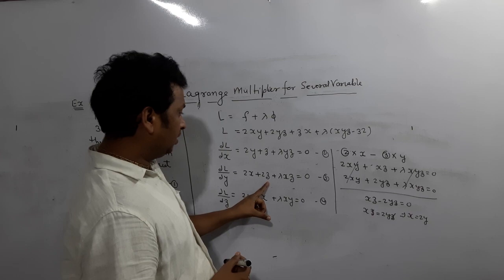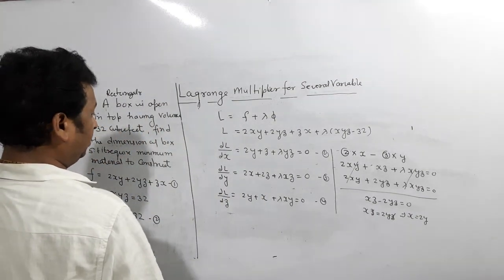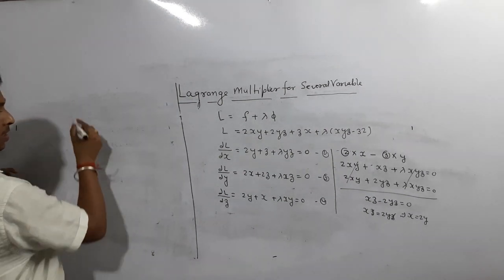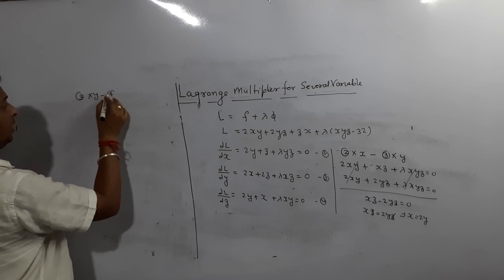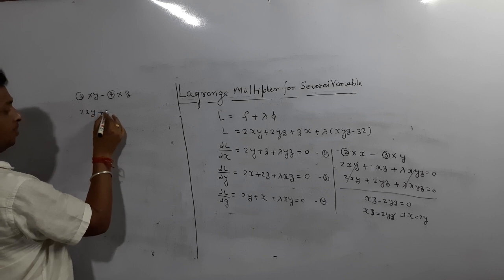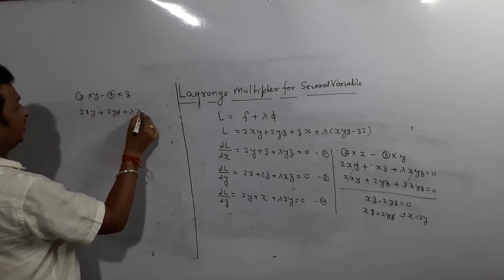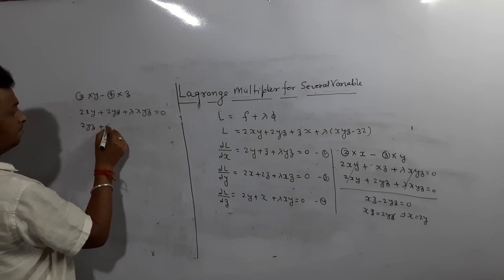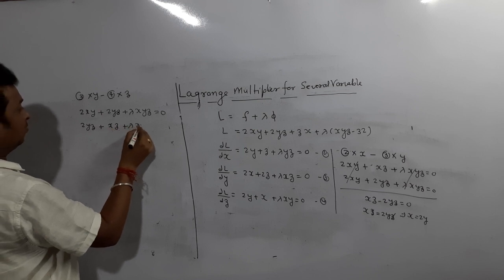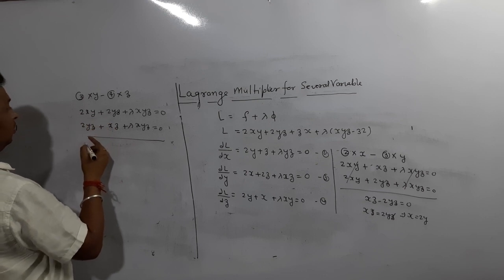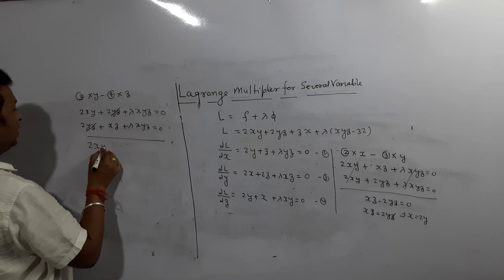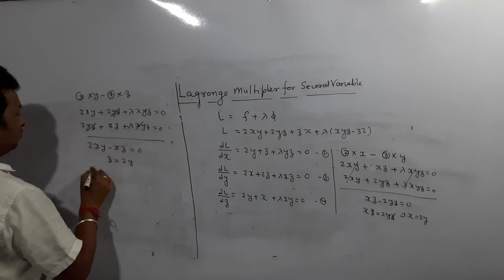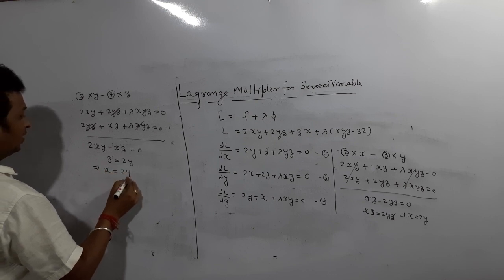Similarly, multiplying equation 3 by y and equation 2 by z and subtracting: 2xy - xz = 0, so x cancels and we get z = 2y. So we have x = 2y and z = 2y.